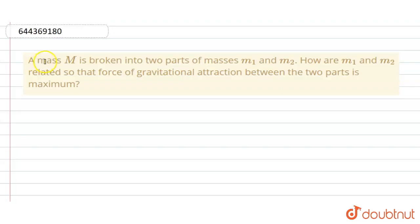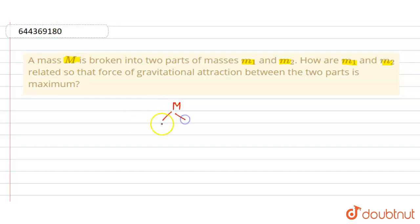Hello everyone. A mass M is broken into two parts of masses M1 and M2. How are M1 and M2 related so that the force of gravitational attraction between the two parts is maximum? We know that mass M is broken into two parts, so the sum of the two masses M1 and M2 is equal to capital M. So M1 plus M2 equals M.